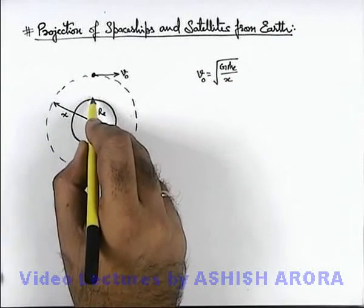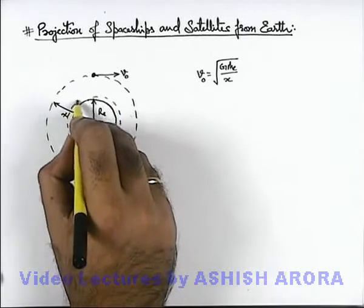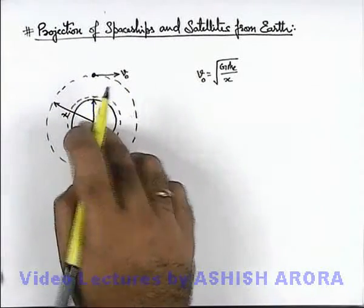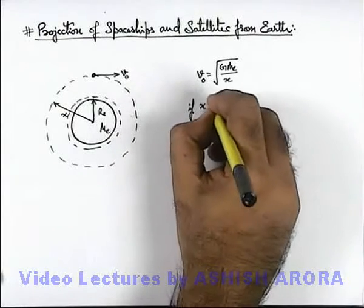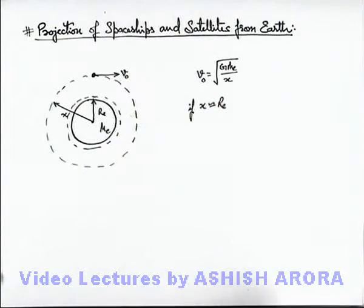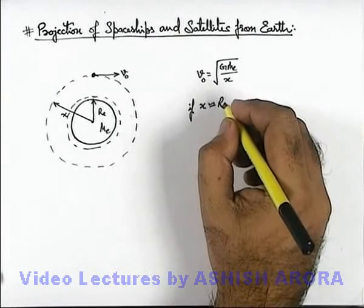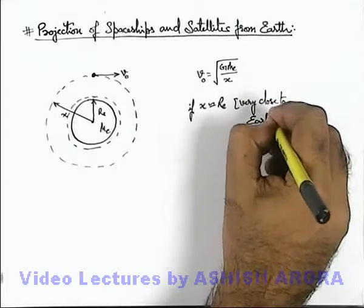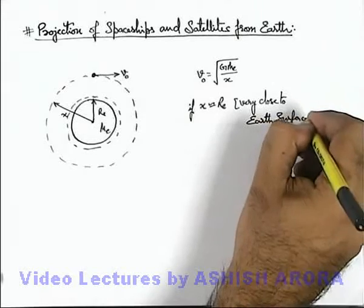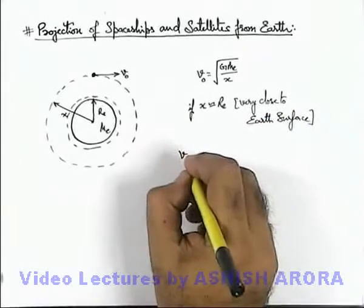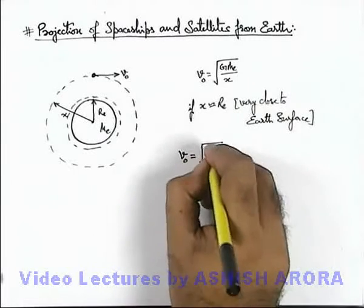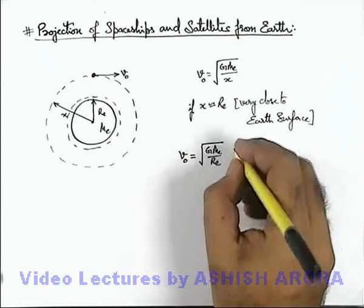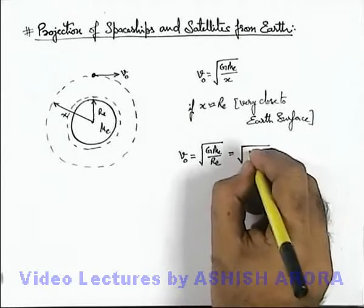Now if a body is thrown such that it is orbiting very close to Earth's surface, or if x is approximately equal to Rₑ, then the orbital speed becomes v₀ = √(GMₑ/Rₑ). Since GMₑ/Rₑ² equals the surface gravity gₛ, this simplifies to v₀ = √(gₛRₑ).